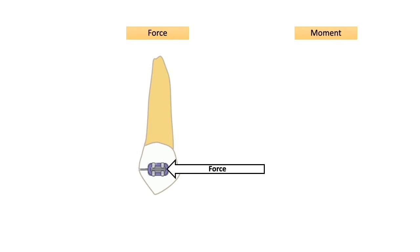Force is basically a vector as it has magnitude and direction. For example, if this tooth is acted upon by a distal force of 100 grams, then 100 grams is the magnitude and distal is the direction. Once a force is applied to the tooth, its nature of motion is regulated to a large extent by its center of mass.